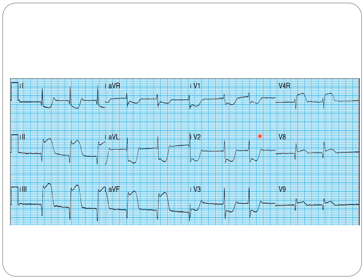Looking at the next ECG tracing: the rhythm appears regular but there is no visible P-wave — this could be a junctional rhythm or atrial fibrillation, though with only two beats it is difficult to decide. The QRS complex is narrow and the axis is normal. In leads 2, 3, and AVF, there is a T-on-Dome ST elevation. In V1, V2, and V3, there is a mirror image of posterior MI with ST depression.